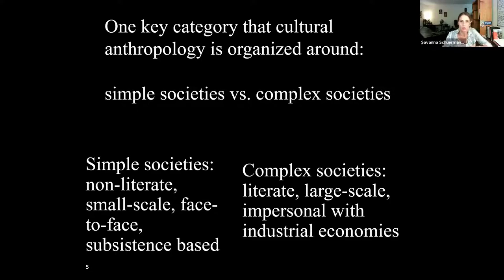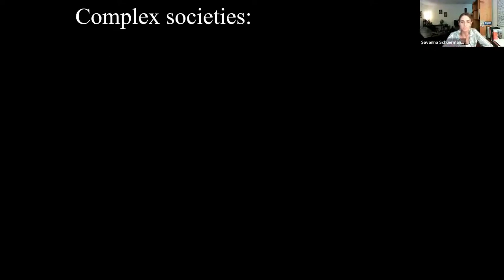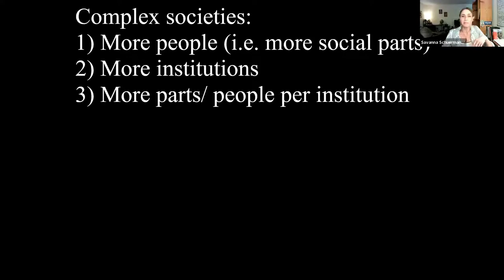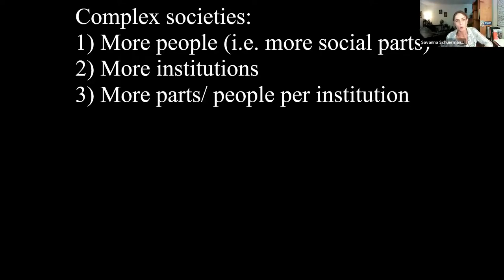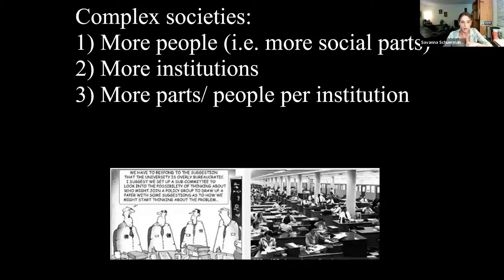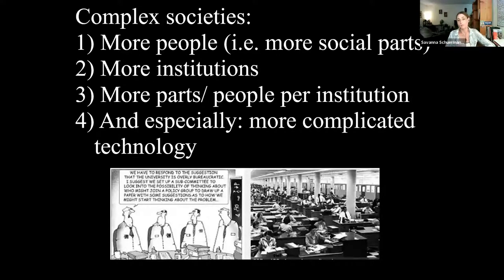We sell our labor or services or products on the market for cash and then buy food or whatever else we need. Complex doesn't mean better — it means more stuff, more parts. That's what we mean when we say complex versus simple: more people, more specialization. Among the Kung, a hunter might also be a healer and a parent with multiple roles. In our society we tend to specialize — some people teach, some people do this, some do that. Complex means more bureaucracy, more steps, more parts, especially more complicated technology.